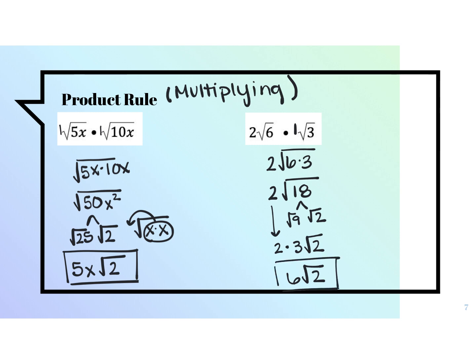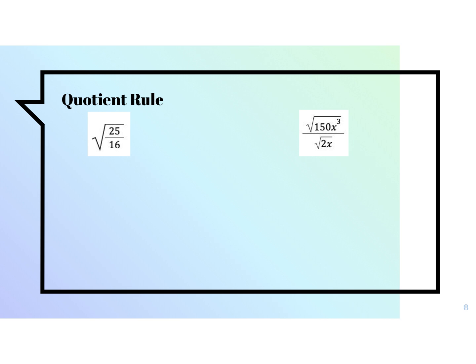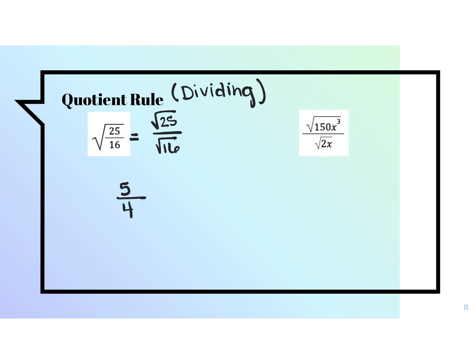Multiplying: multiply numbers out front, multiply numbers underneath, and then simplify. You're also going to do the quotient rule — remember, this is just dividing. When we're looking at dividing, you take the square root of the top and the square root of the bottom. So the square root of 25 over 16 is the same as the square root of 25 over the square root of 16. Both of these numbers are perfect squares, so I can simplify right away: square root of 25 is 5, square root of 16 is 4. There are no radicals left, so that would be my answer and I'm done.